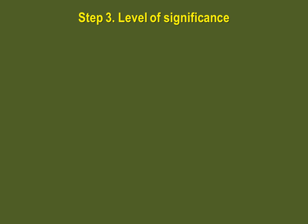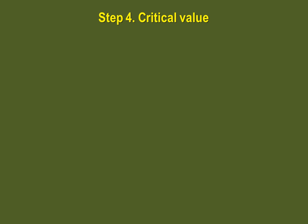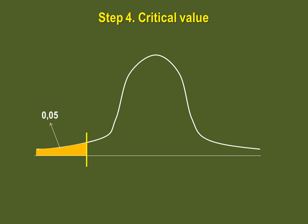The third step is identifying the level of significance. Unless otherwise stated, we will use alpha equal to 0.05. Step 4 is determining the critical value. Because this is a z-test, we revert back to our z-table. We are doing a left-tailed test with a level of significance of 0.05, so we are looking for the z-value that delimits an area of 0.05. By now you may already know that this value is minus 1.645.